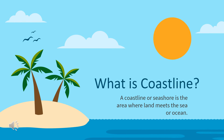Before we discuss what coastal erosion is, let's first discuss what a coastline is. A coastline or seashore is the area where land meets the sea or ocean — the boundary between sea and land. An example of a coast is a beach.